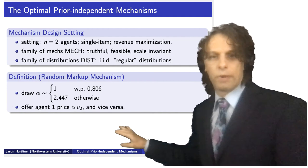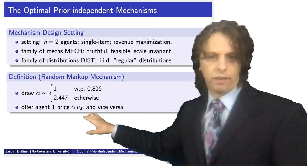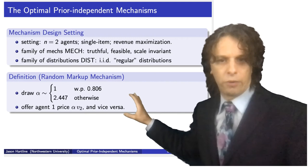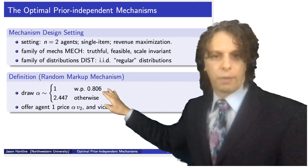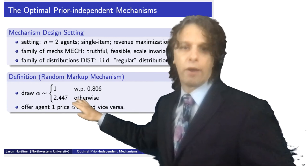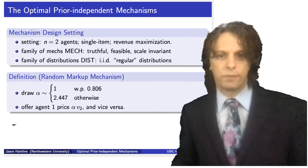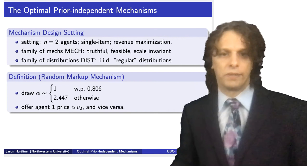I essentially run the second price auction with a markup factor of alpha. I offer agent one a price of alpha times V2, and vice versa. Since alpha is always at least one, only one agent will ever buy, satisfying feasibility. With probability 0.8 we run the second price auction; with probability about 0.2 we take the second-highest bid, mark it up by a factor of about 2.5, and offer it to the highest bidder — this might not sell the item, but we never sell more than one item.